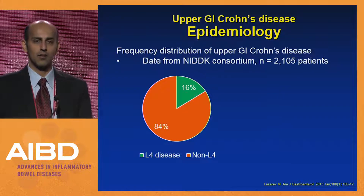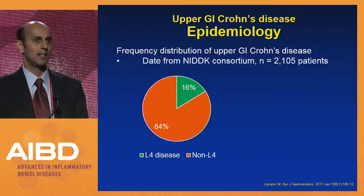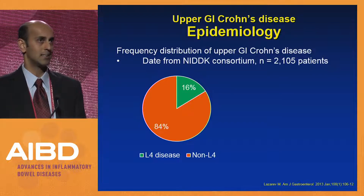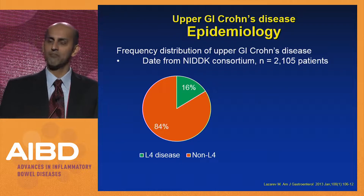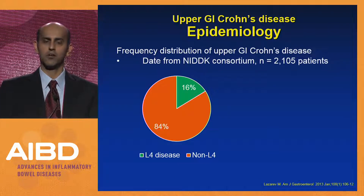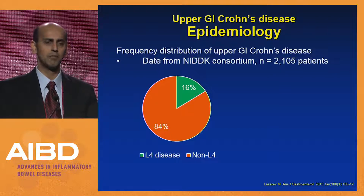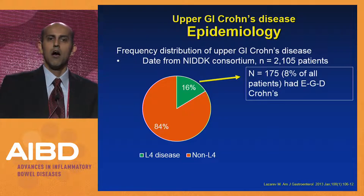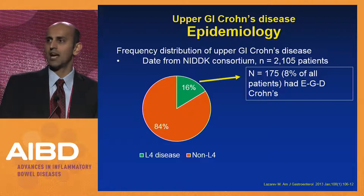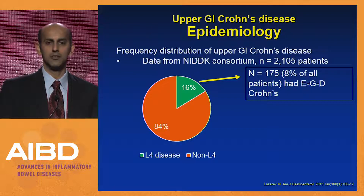How common is esophageal gastric duodenal Crohn's disease? The best data from North America comes from this large NIDDK consortium developed to study genetics and phenotype of patients with Crohn's disease. They amassed about 2,000 patients that they then sub-phenotyped by location. About 16% had L4 disease, which is upper GI Crohn's disease. Of these, 8% had esophageal, gastric, or duodenal Crohn's disease — so about 175 out of over 2,000 overall.